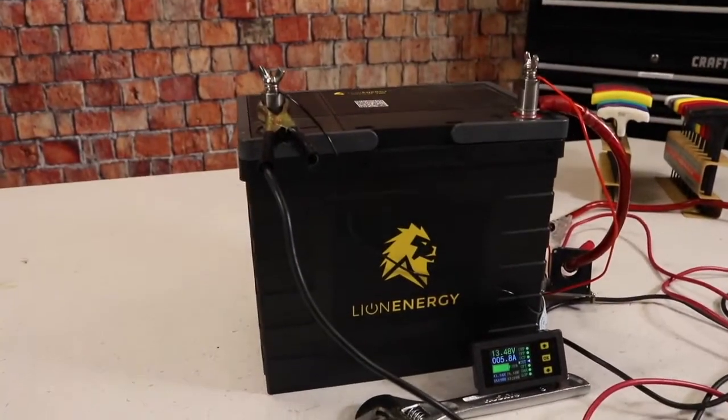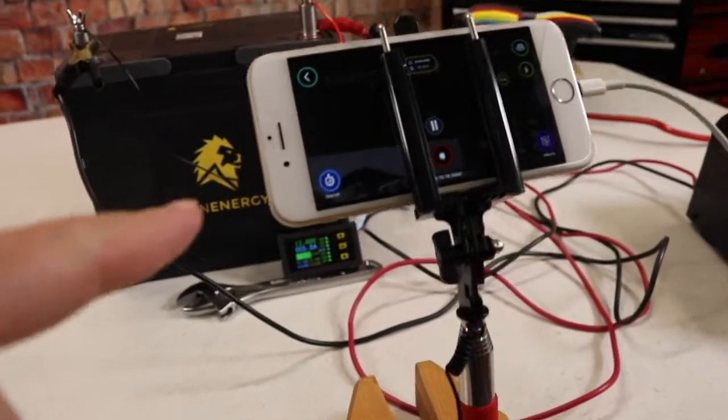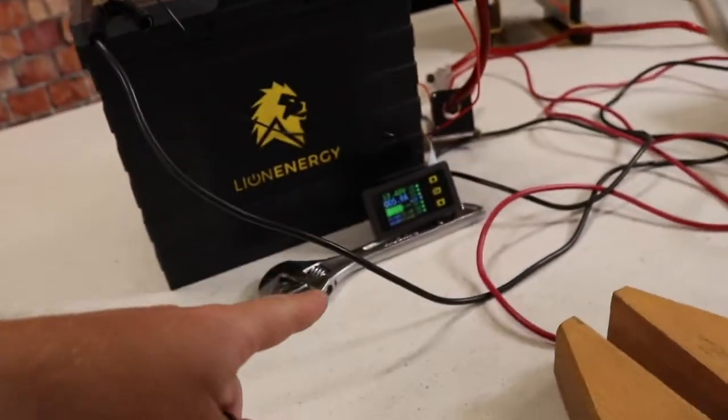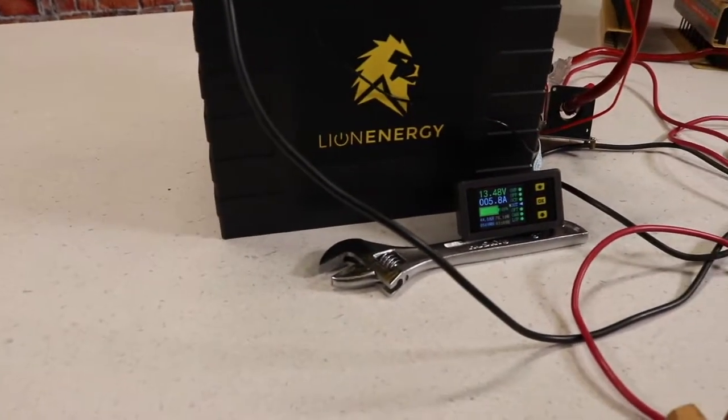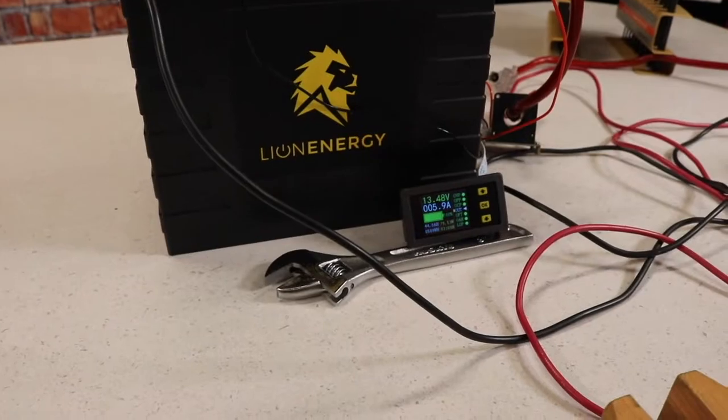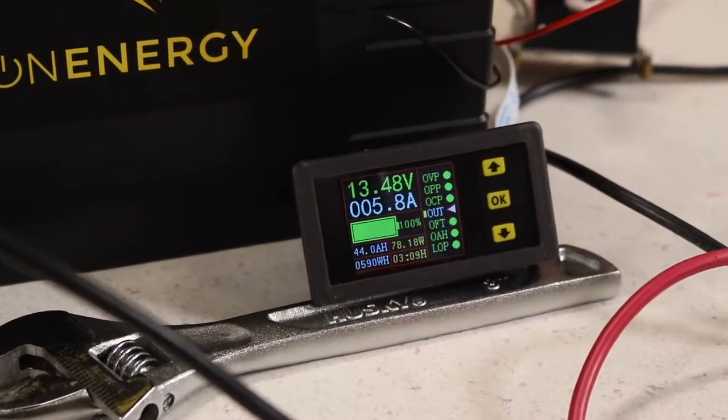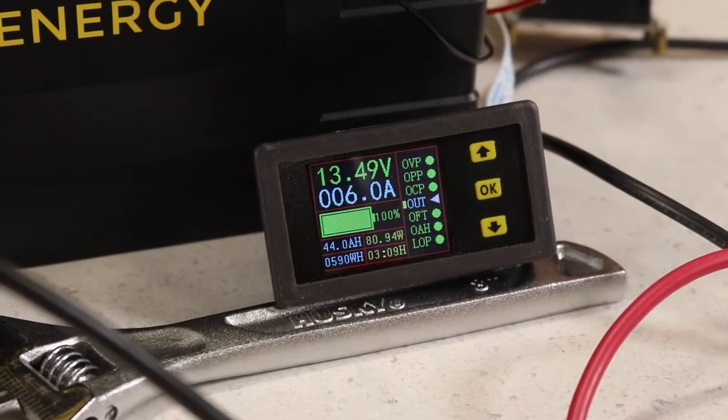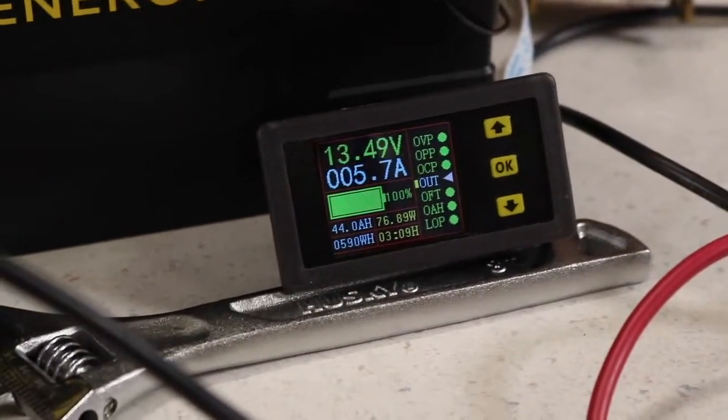You might recognize this test rig from other videos. We've got our time-lapse camera so we can go through and watch. This is taking a picture every 30 seconds of the charge rate and amp hours. Let's zoom in on this. We're at about seven hours. We did about four hours yesterday, and of course the timer reset, but the amp hour meter did not.